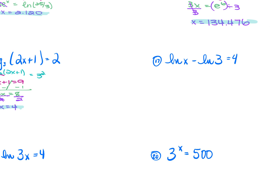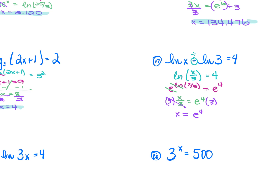For number 17: ln(x) − ln(3) = 4. Subtraction means division, so rewrite as ln(x/3) = 4. Raise e to both sides: e^(ln(x/3)) = e⁴. E and LN cancel, leaving x/3 = e⁴. Multiply each side by 3. Using your calculator, e⁴ × 3 ≈ 163.794.